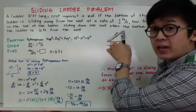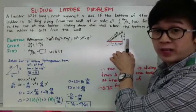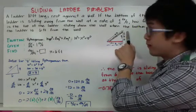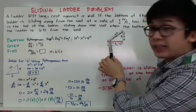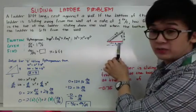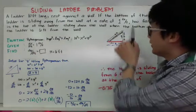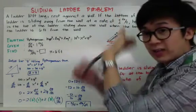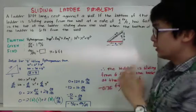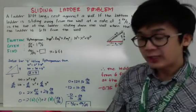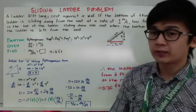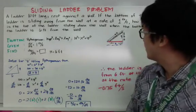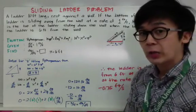The ladder is sliding down the wall at a certain rate, and that's what we need to find: the rate of change with respect to time of the ladder sliding down the wall. We are given the base of the ladder, which is 6 feet. All we need to do is find the rate of change of y, which is the wall. Since we are working with a right triangle and need to find the missing side, we're going to use the Pythagorean theorem.